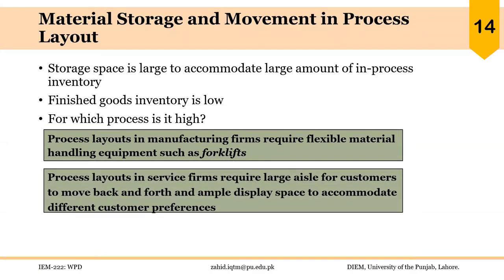Storage space is large to accommodate a large amount of in-process inventory, while finished goods inventory is low. Process layouts in manufacturing firms require flexible material handling equipment such as forklifts. Process layouts in service firms require large aisles for customers to move back and forth and ample display space to accommodate different customer preferences. There should be sufficient space for the movement of material handling equipment like forklift trucks in manufacturing organizations.